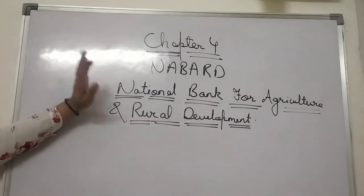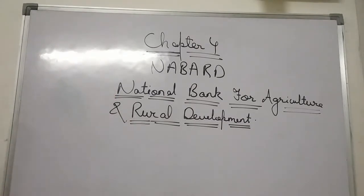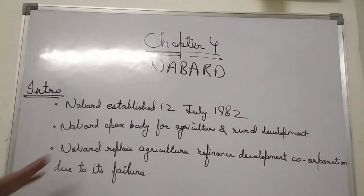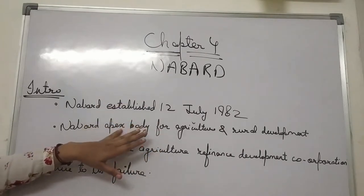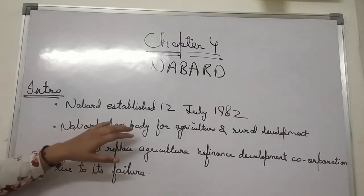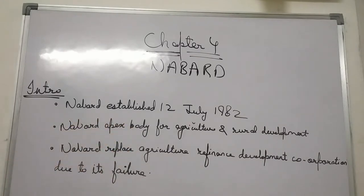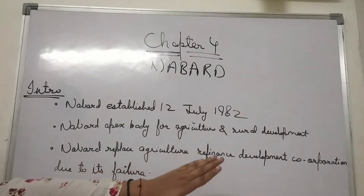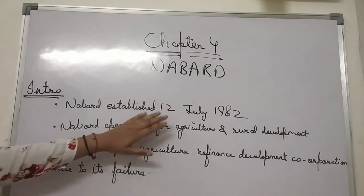NABARD — National Bank for Agriculture and Rural Development — was established on 12 July 1982. It is an apex body for agriculture and rural development, similar in stature to our commercial banks but specifically focused on agriculture and rural development banking.